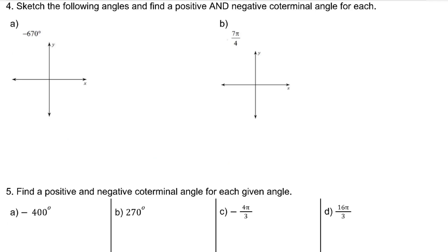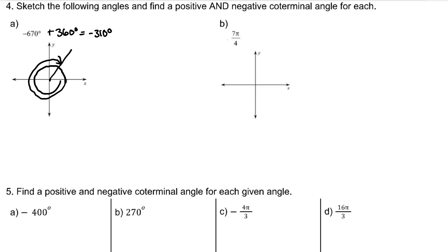Sketch the following angles and find a positive and negative coterminal angle for each. Negative 670 degrees is at least one full rotation in the negative direction, so starting at the initial side we move clockwise past 360 degrees. Adding 360 gives negative 310, which is almost another full circle but 50 degrees short. Adding 360 again gives positive 50 degrees. So negative 310 degrees and 50 degrees are both coterminal to negative 670 degrees.